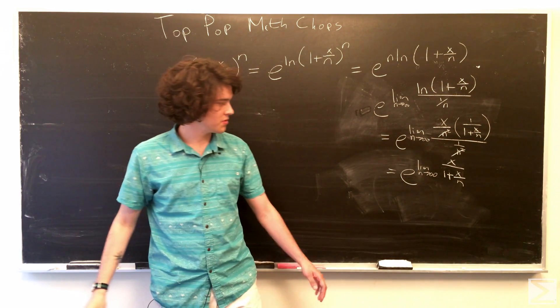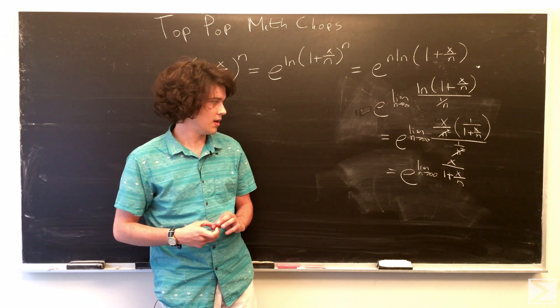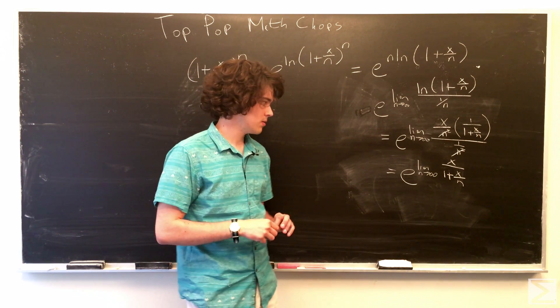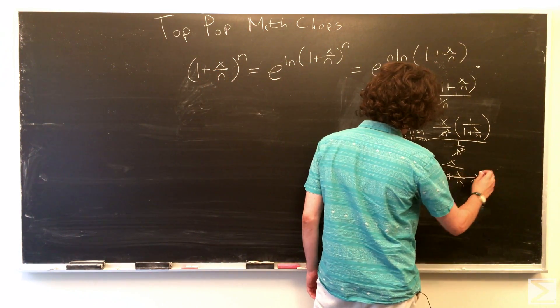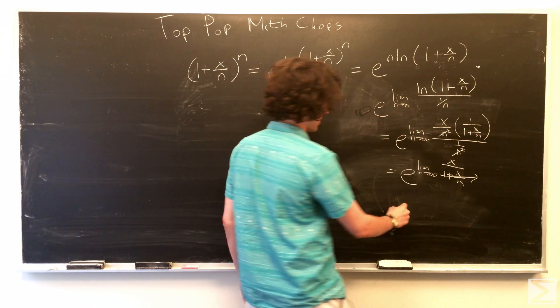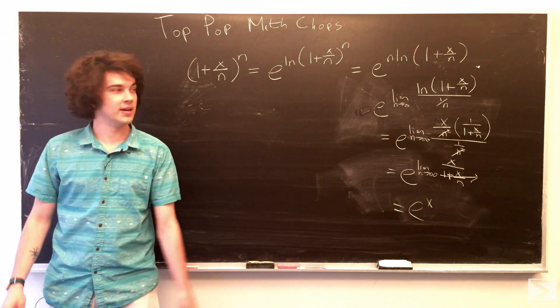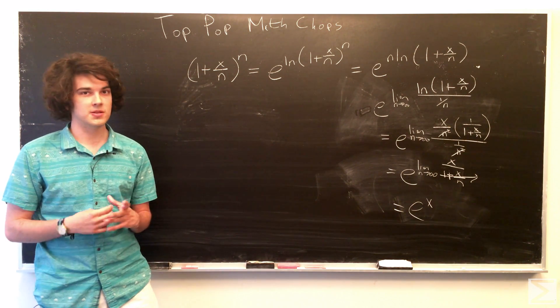And, of course, as n approaches infinity, x over n for finite x is going to tend to 0. So, this just becomes x over 1, which is just x. So, we have this equals e to the x. So, this is the rigorous textbook example proof.